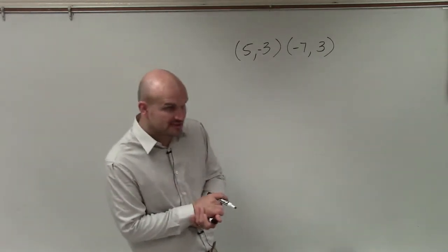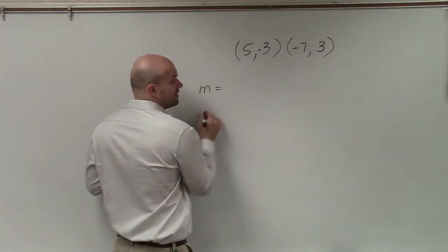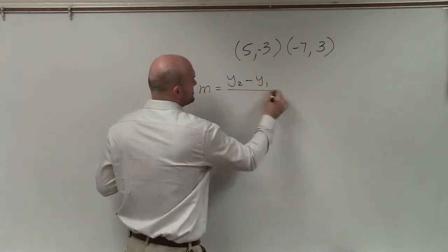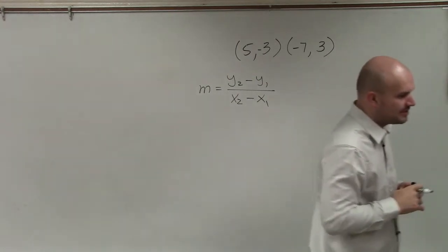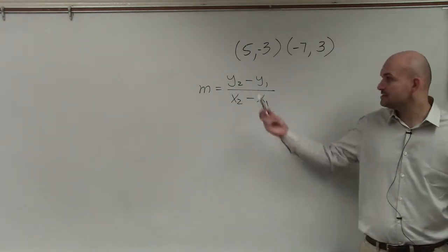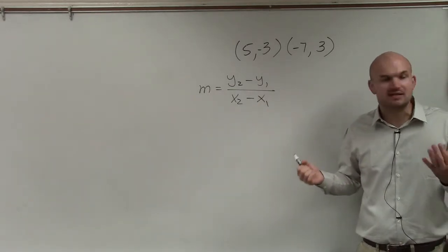When determining the slope between two points, one of the main important formulas that you're going to want to make sure you know, and if you don't know, write it down so you have it, is the slope formula, how to determine the slope between two points. When we're going to be talking about slope, slope is a ratio. It's the change in the y-coordinate over the change in the x-coordinates between any two points on a line.